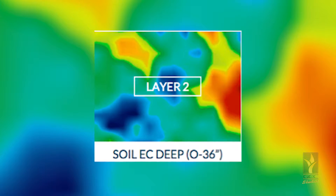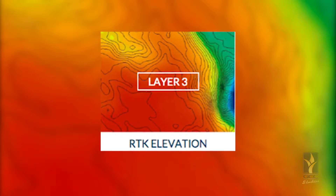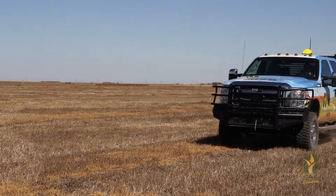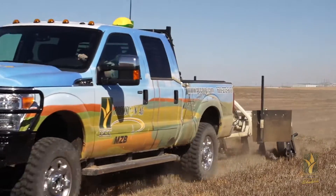The second layer of the multi-layer approach is very similar, but it measures from 0 to 36 inches deep in the ground. The third layer is an elevation map, which we capture using the RTK on the truck to find the high and low areas across the field.